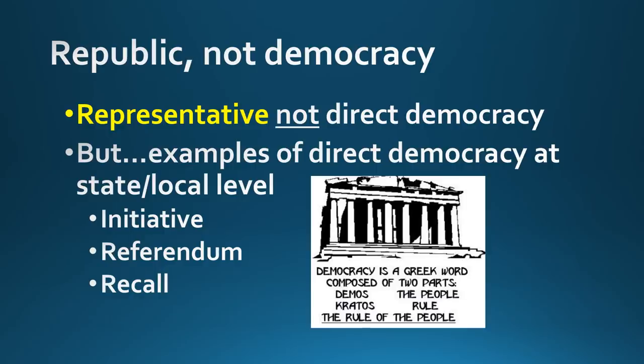Along with that, we have a republic, not a democracy. We have a representative form of government — we choose representatives. We do not directly vote on policies and issues; that's direct democracy. Even though that doesn't occur at the federal level, there are some states that do have direct democracy at state and local levels. Things like initiatives and referendums. An initiative is where a citizen can write a bill, and if they get enough ballot signatures, it can be voted on by the general public.